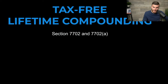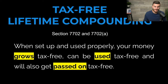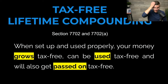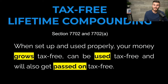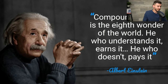Section 7702 is the part of the tax code that gives life insurance its tax-free nature. When set up and used properly, your life insurance can grow tax-free, be used tax-free, and get passed on income tax-free to the next generation. This is an incredible benefit, especially with taxes potentially being higher in the future, and it's a key reason why some people want a portion of their money in life insurance.